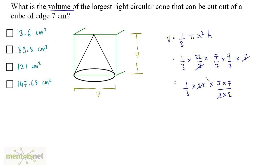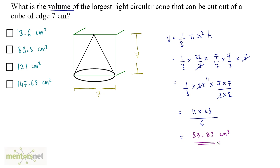So 22 divided by 2 gives 11, and 11 × 49 divided by 3 × 2 equals 11 × 49 divided by 6. When calculated, that gives approximately 89.83 cubic centimeters. So that's the volume — option B.